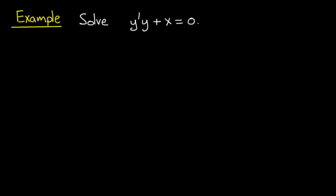Let's illustrate the technique of separating variables by doing an example. So let's solve the equation y prime times y plus x equals 0. You may remember this equation from the very first video, it was one of the examples I gave you.